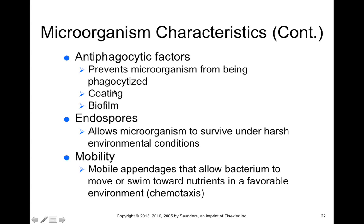Mycobacterium tuberculosis has very effective antiphagocytic factors and therefore has more virulent infections because it resists phagocytosis by the body's own immune cells. Other ways microorganisms can evade the immune system include producing endospores, which can survive under very harsh environmental conditions — even autoclave — allowing bacteria to persist for long periods. Certain microorganisms also have mobility factors such as cilia or flagella, allowing them to evade immune cells or swim toward nutrients through a process called chemotaxis.